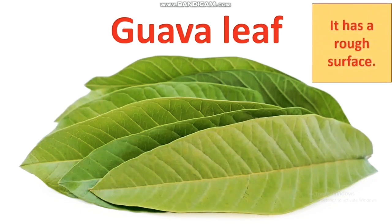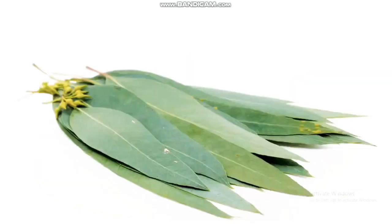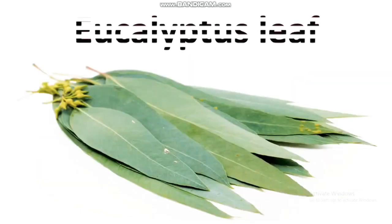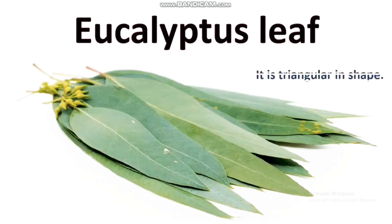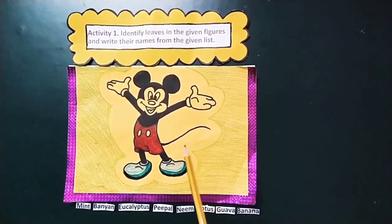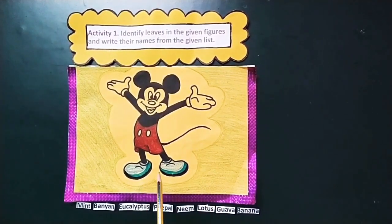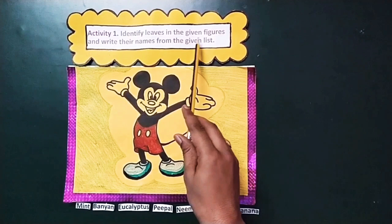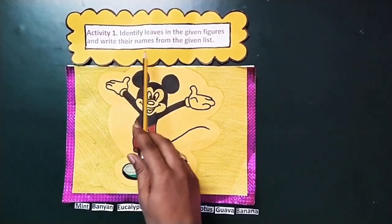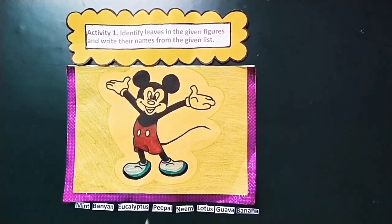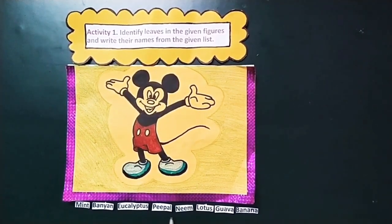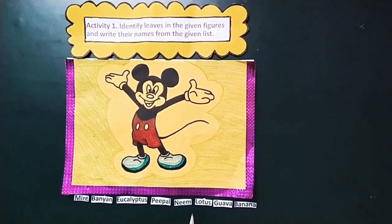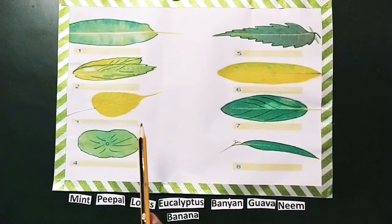The guava leaf has a rough surface. Next, we have eucalyptus leaf — it is triangular in shape. Now let's do the activity. Identify the leaves in the given figures and write their names from the given list. Let's do it.